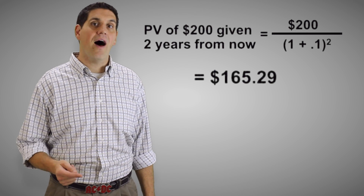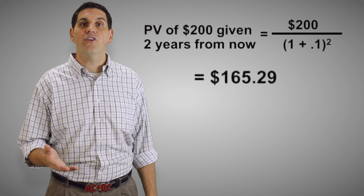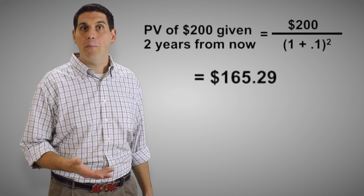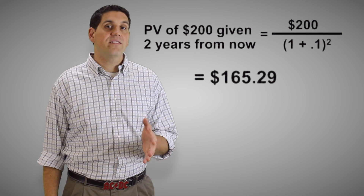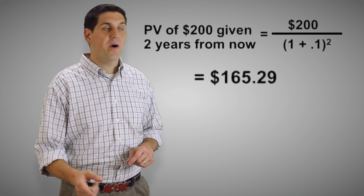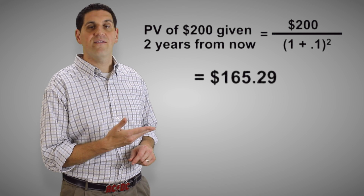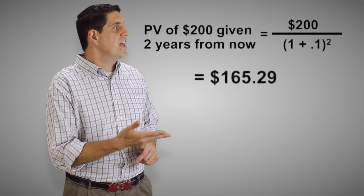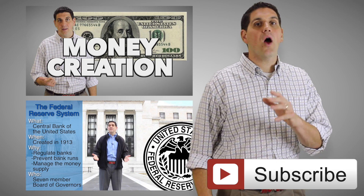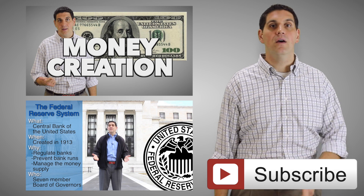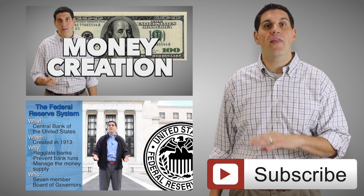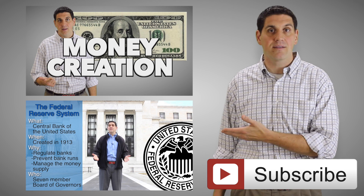The reason you're learning the time value of money is to understand that money and time are related. It's also going to help you understand the idea of compound interest. For example, if you knew you needed $200 two years from now, you'd know to put $165 and change in the bank and that would eventually become $200 in two years. I hope this video helped you understand the time value of money. Make sure to take a look at the next video that explains T-accounts and the whole idea of money creation by banks.